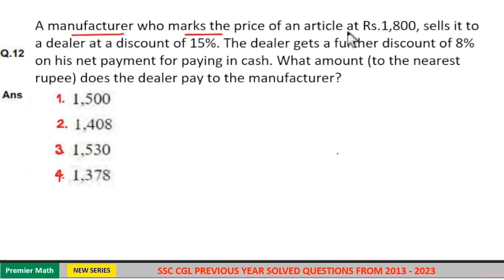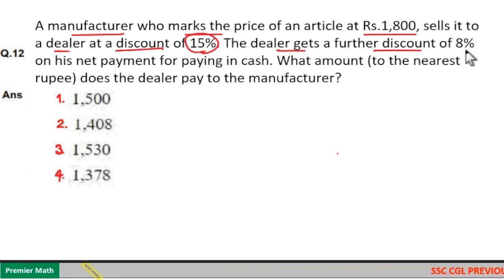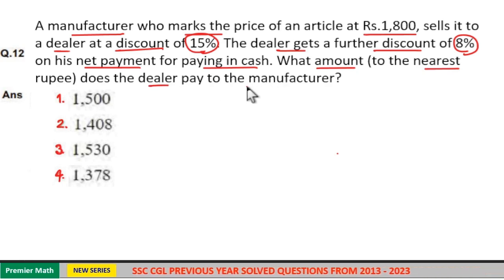A manufacturer who marks the price of an article at Rs.1800 sells it to a dealer at a discount of 15%. The dealer gets a further discount of 8% on his net payment for paying in cash. What amount, to the nearest rupee, does the dealer pay to the manufacturer?